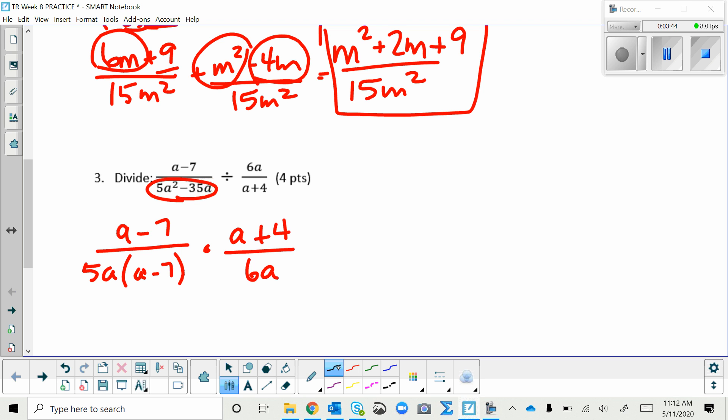So canceling things that are the same in the top and bottom, they are common. The A minus 7's canceling, leaving me with a 1 on top there. And now I multiply across the top and bottom. 1 times A plus 4 is just A plus 4, and on the bottom I have 5A times 6A, which is 30A squared.